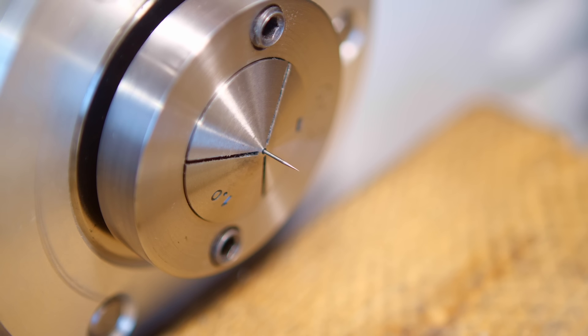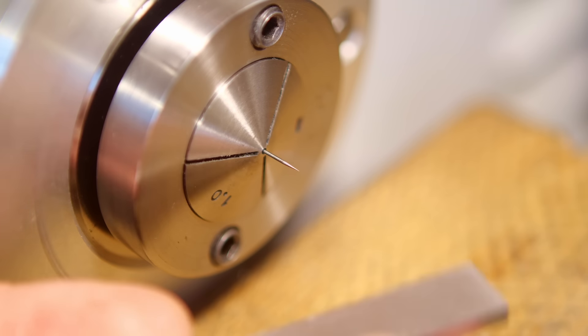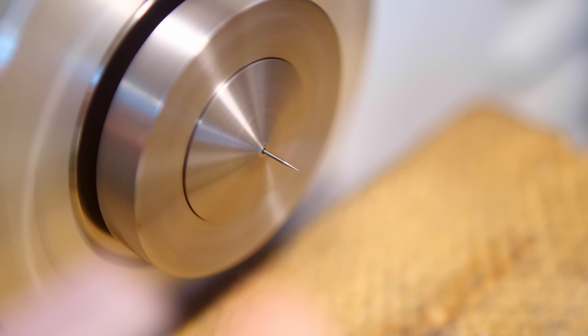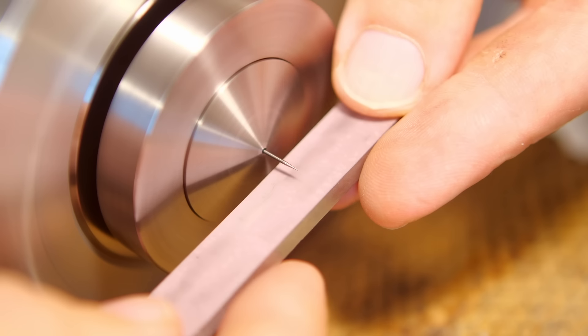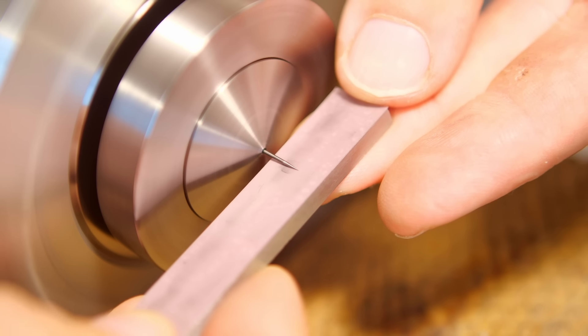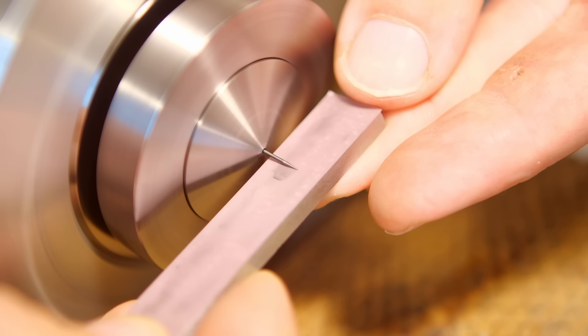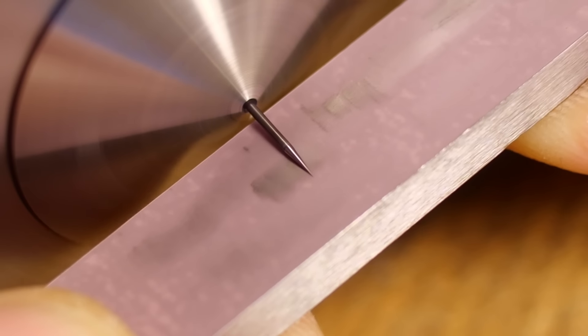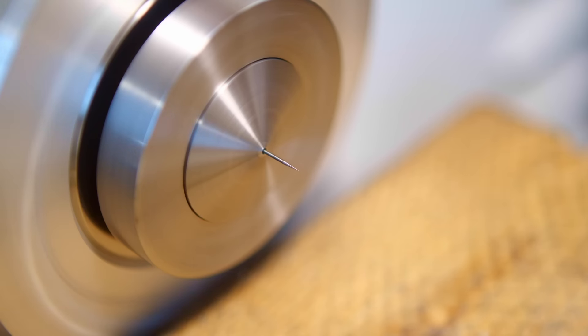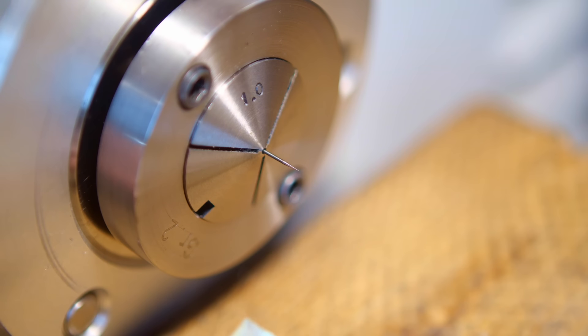And then we follow up with some 3 micron lapping film. It's this pink stuff that has an adhesive back and I just stick it to a parallel. Now really the last step now is a piece of polishing wood with some 1 micron diamond paste on it.